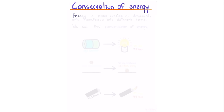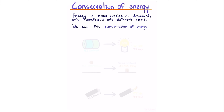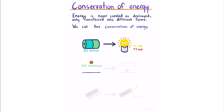Conservation of energy. Energy is never created or destroyed, only transferred into different forms. For example, 10 joules of electrical energy converts into 3 joules of light and 7 joules of heat. Or 35 joules of gravitational potential energy converts into 2 joules of air resistance and 33 joules of kinetic energy. Or 100 joules of chemical energy converts into 10 joules of light and 90 joules of heat.